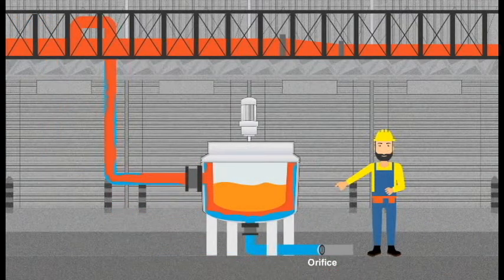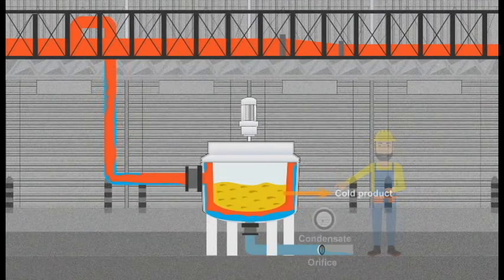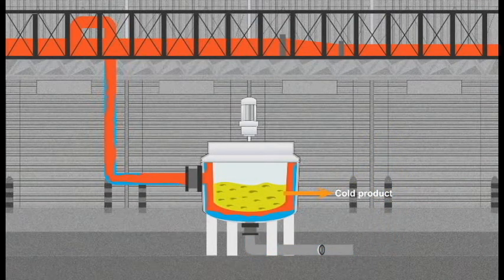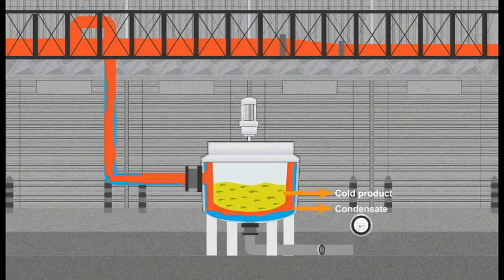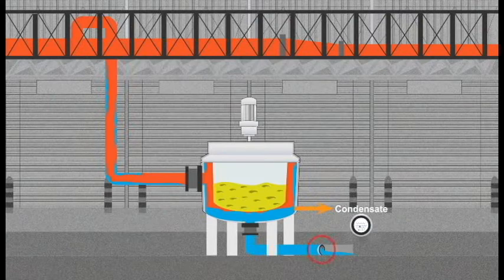Since an orifice plate also has a fixed orifice size, it can only handle a limited amount of condensate. When the equipment and the product is cold, huge amount of condensate is formed and this leads to flooding of the jacket. This flooding takes place because the orifice is not able to evacuate the condensate as fast as the condensate is getting formed inside the jacket.